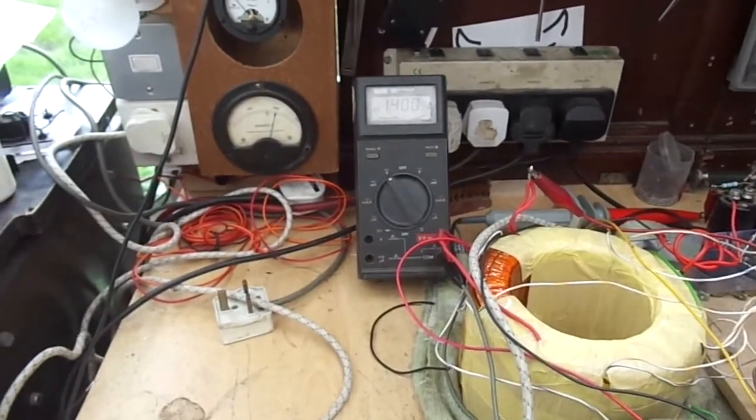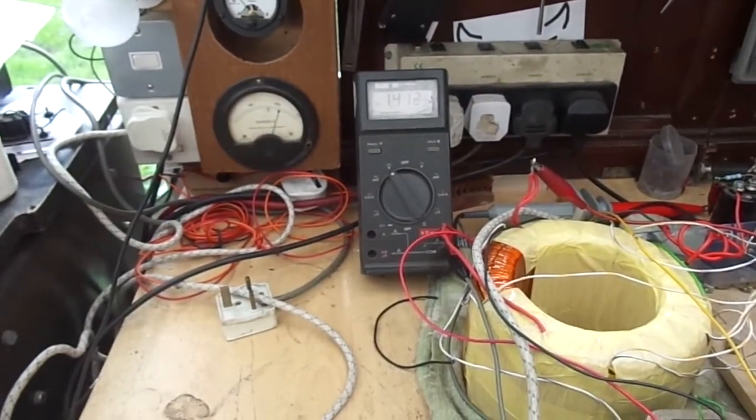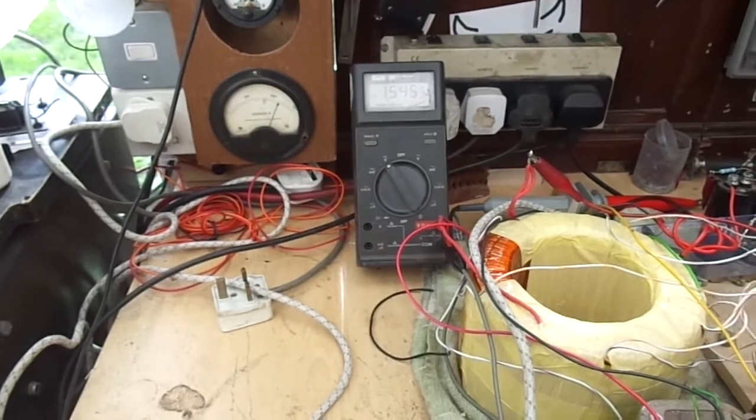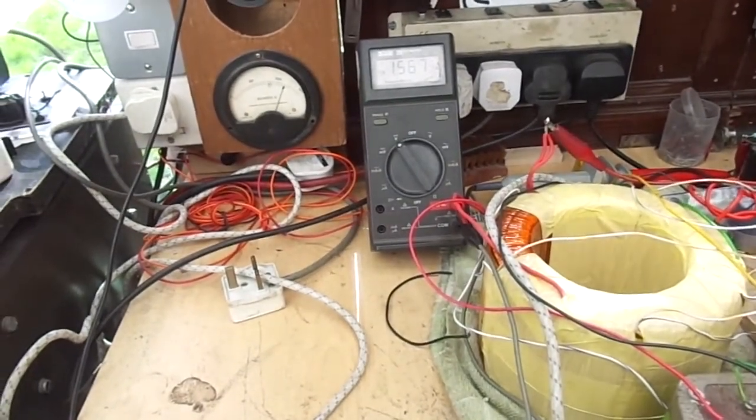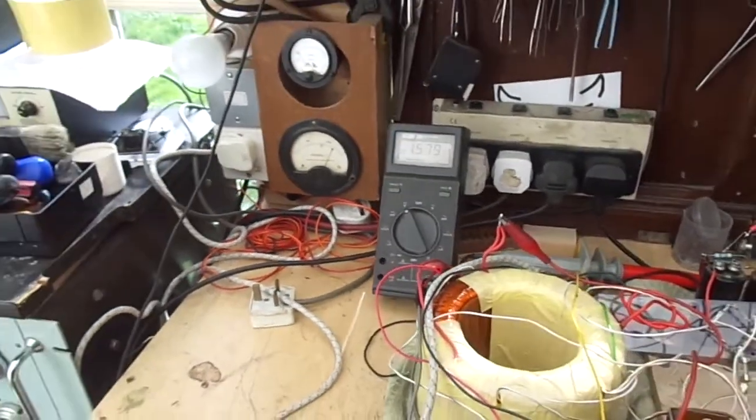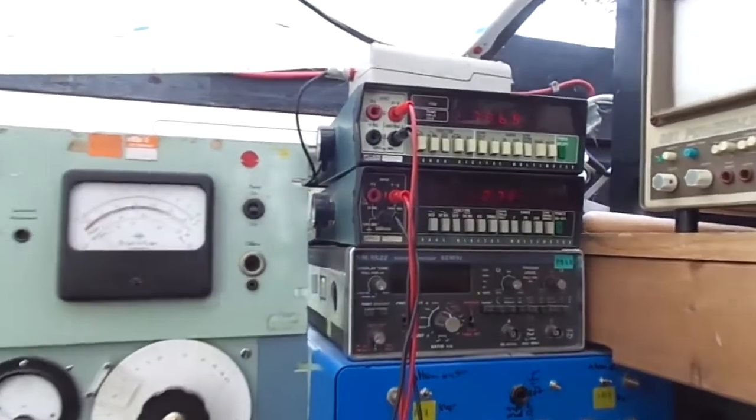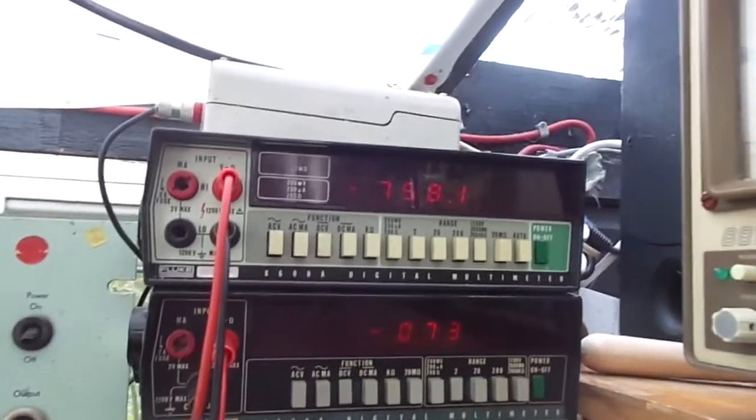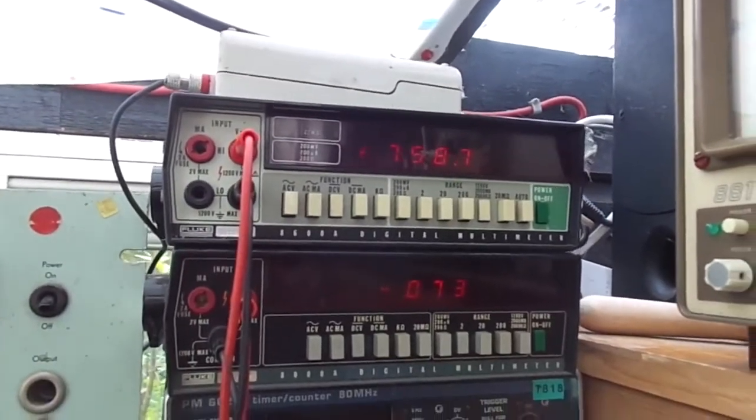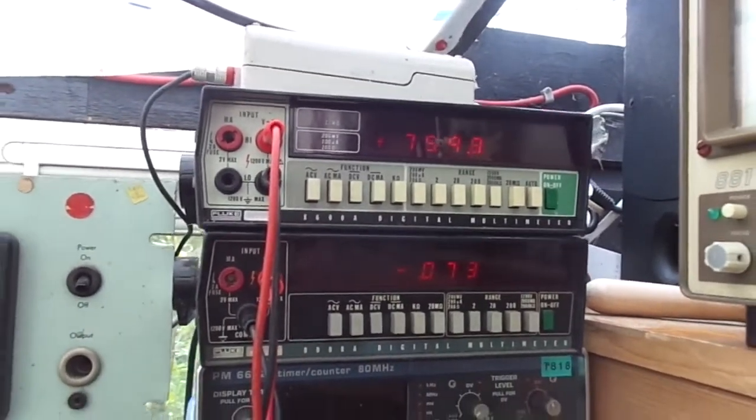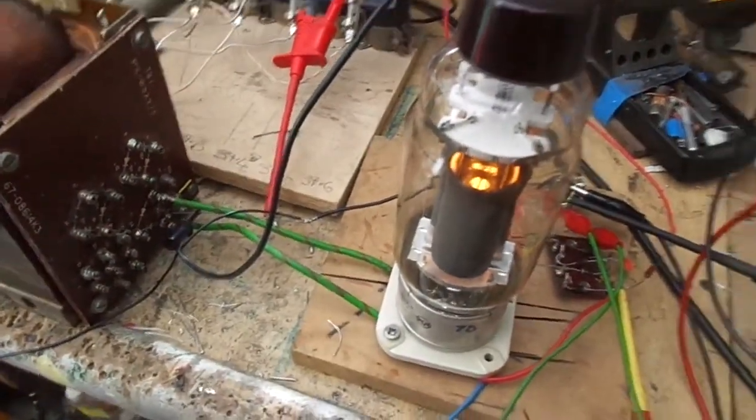1,400 volts EHT. 240 volts main voltage. 1,580. You can see that. 758, 59, 60 on the screen grid. Filament is a lot more brighter.